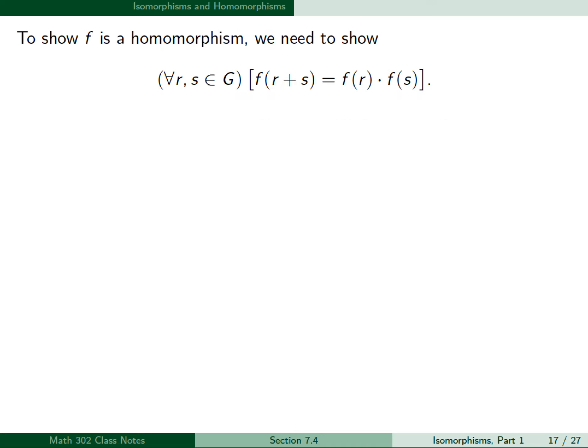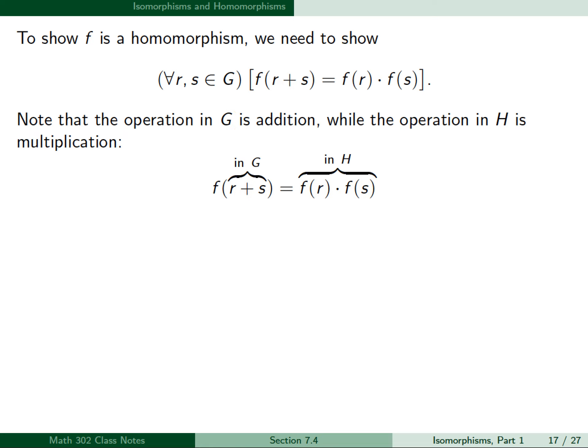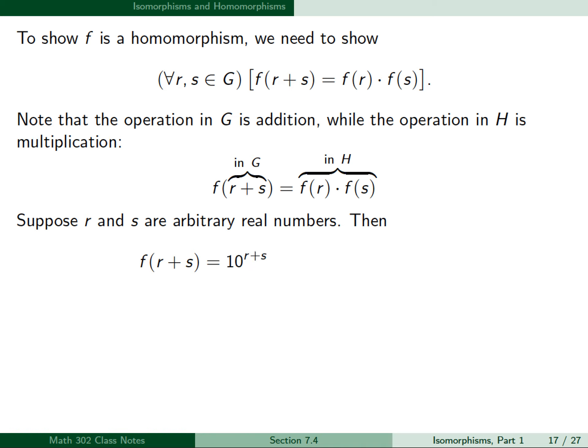To show f is a homomorphism, we need to show that for all r and s in G, f(r + s) = f(r) · f(s). Note the operation in G is addition, while the operation in H is multiplication. Suppose r and s are arbitrary real numbers. Then f(r + s) = 10^(r+s) = 10^r · 10^s = f(r) · f(s). So f is a homomorphism.